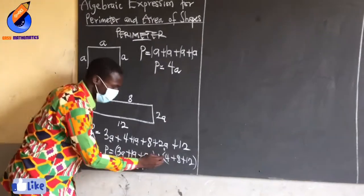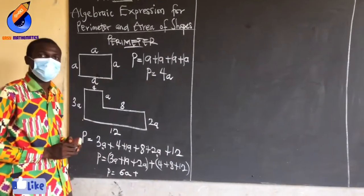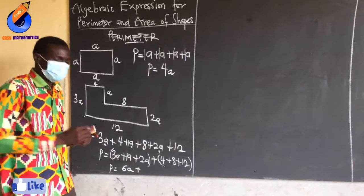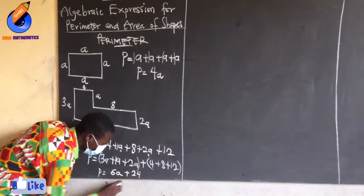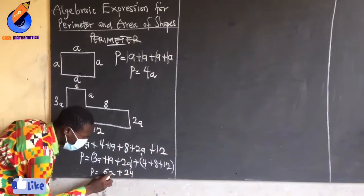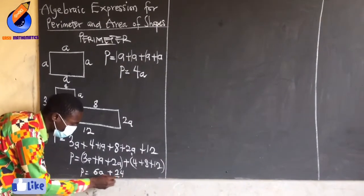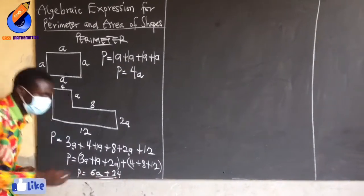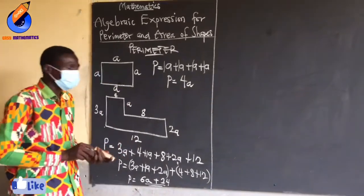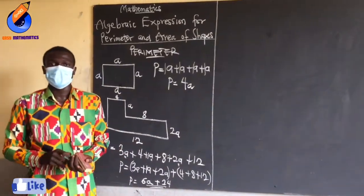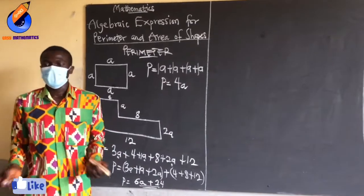Now I can add the like terms together. Three plus one is four — because there is an unseen one in front of A — so three plus one is four, and four plus two gives me 6A. Plus eight: four plus eight gives me twelve, and twelve plus twelve gives me twenty-four. So I leave the perimeter as 6A plus 24. This is how we find the perimeter for an algebraic expression.